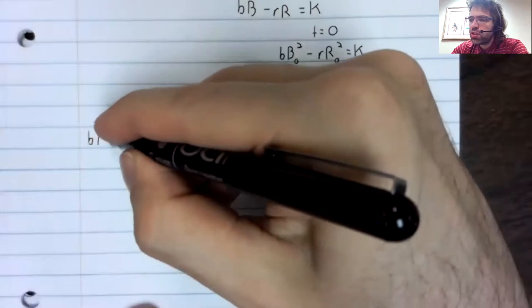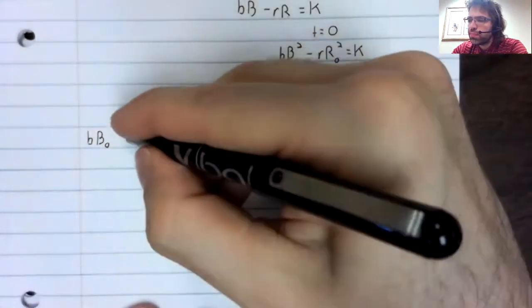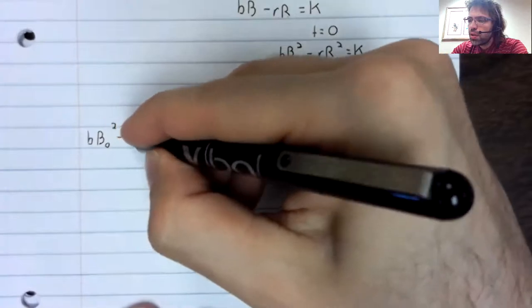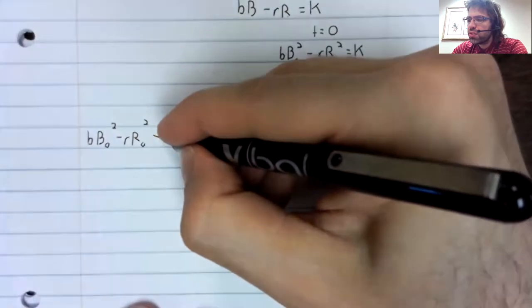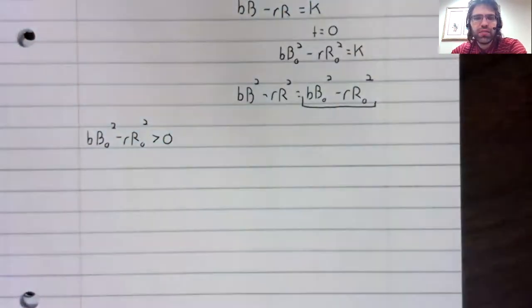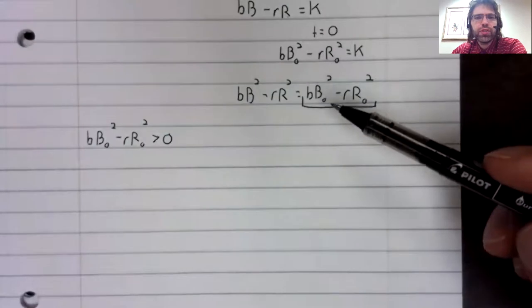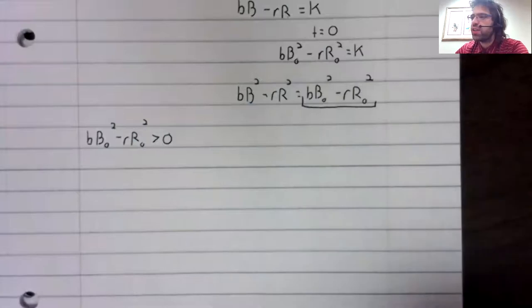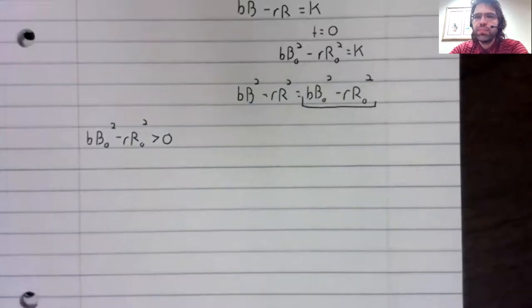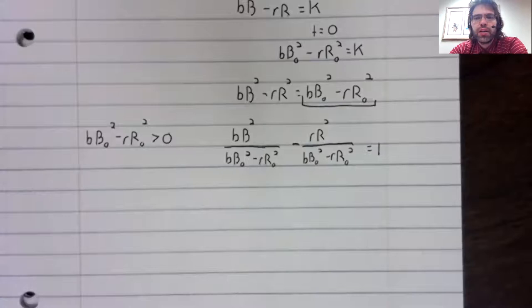Consider the situation where this is positive. I'm going to divide both sides of this equality by the right-hand side and I am going to finish rewriting this so that it is in the standard form of a hyperbola.